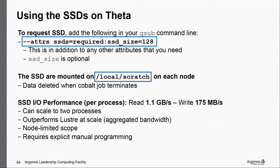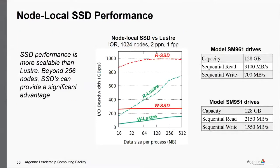The SSD performance: you can scale up to about two processes or so. When writing to and reading from the SSD with 1,000 nodes, you're doing better than Lustre for all different sizes. At 256 nodes, for larger data sizes you would sometimes do better with Lustre. So at scale the SSDs are useful for production or large-scale IO as long as the data fits on them. At lower scales, it's mainly useful for small files or temporary storage.